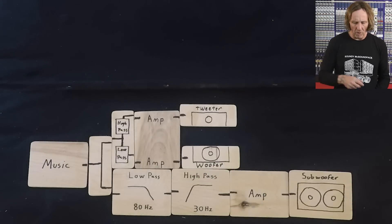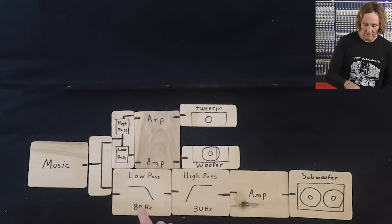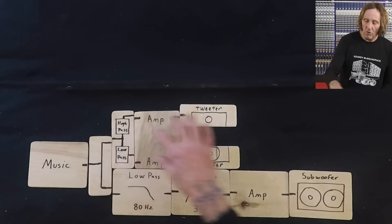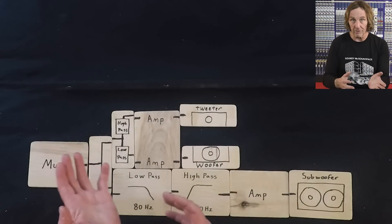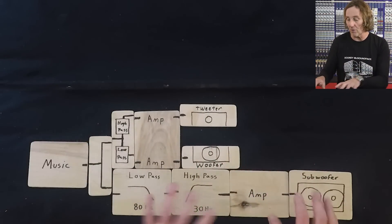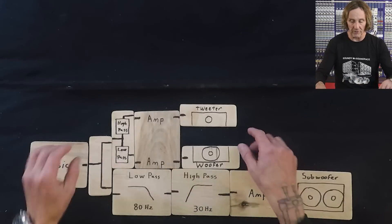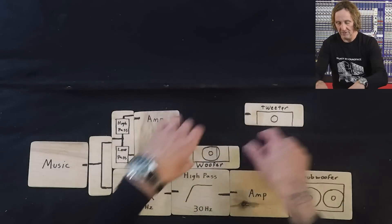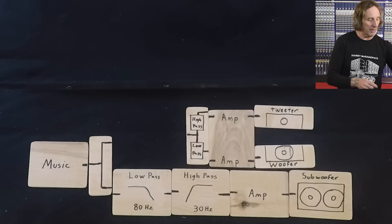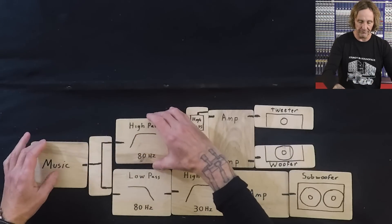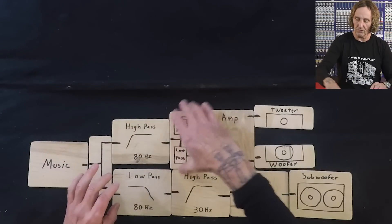So now we have this set up. But also we don't want these low frequencies going to the woofer now. We want the woofer to reproduce above that. We want the subwoofer to dedicate to those frequencies. So to solve that, we would put a high pass filter onto the full range box.